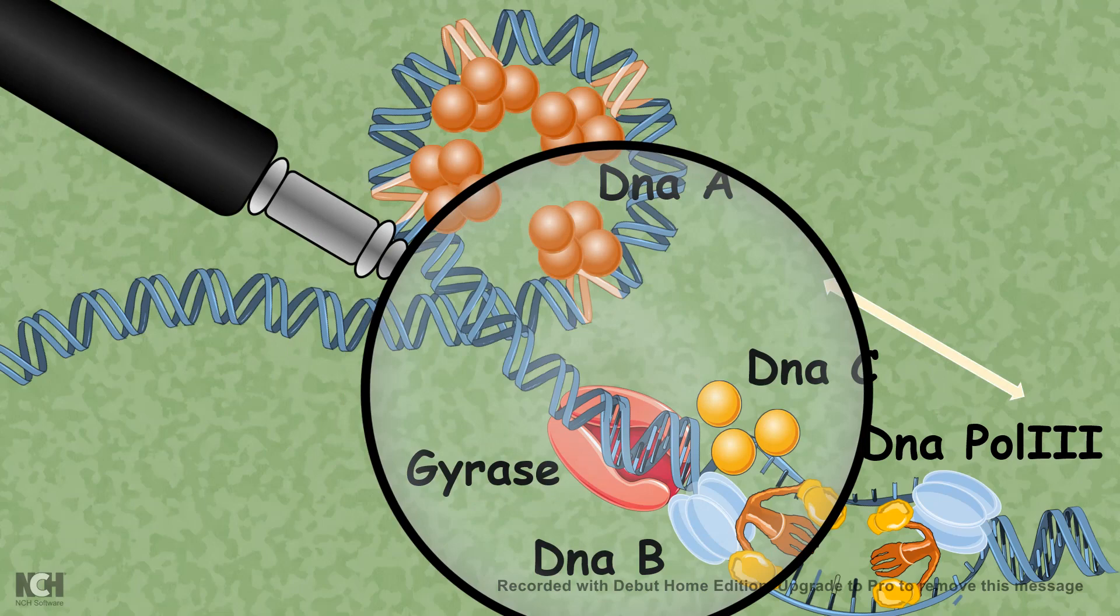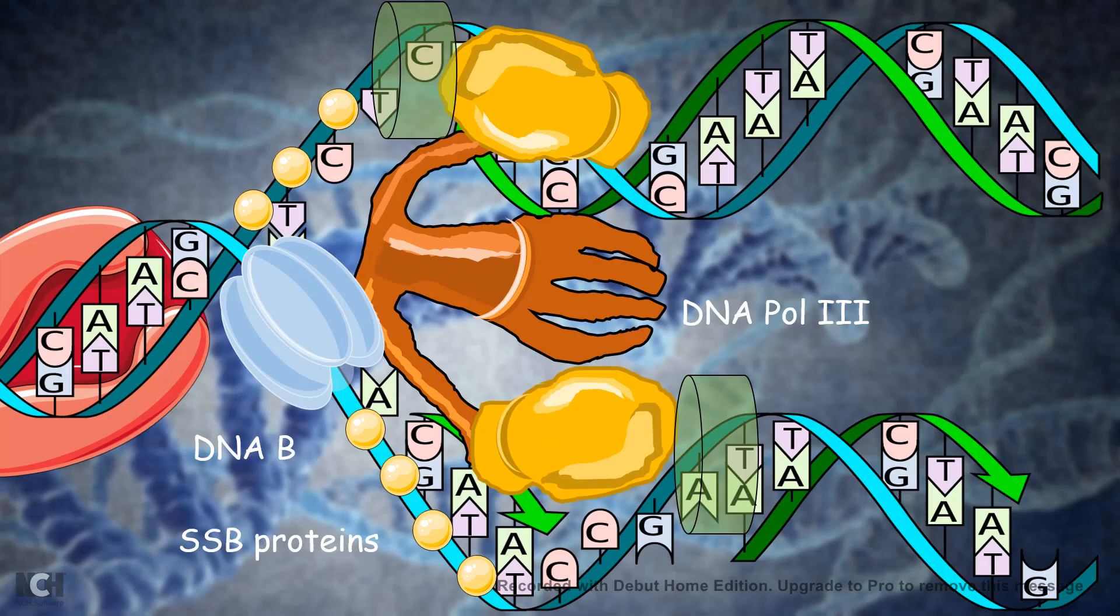Looking at this process in more detail, we would understand that the key feature of the replication initiation differs in eukaryotes and prokaryotes. After initiation, DNA polymerase 3, which is the prevalent polymerase present in prokaryotes, takes part in the polymerization reaction or strand synthesis reaction. With the help of RNA primer, there would be primer formation and followed by that, DNA Pol3 would perform its work.